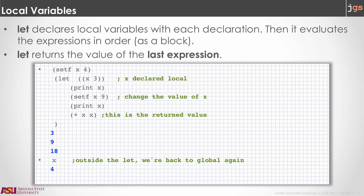The return value in the let expression is going to be 18, which is the last value printed on the screen — because the last instruction is the addition of X plus X, which is 9 plus 9. In this example, we also define a location X outside of the let with the value 4. After the let expression, if we ask for the value in location X, the interpreter shows us 4, the same value we had before the let expression. So everything done with X inside the let expression is like working with a local variable.